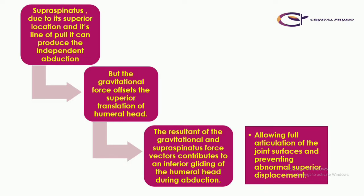The supraspinatus is located superiorly and pulls the humeral head in the superior direction. But the gravitational force offsets this superior translation, so the resultant of the supraspinatus muscle force and gravitational force acts in the inferior direction, pulling the humeral head inferiorly and preventing its abnormal superior displacement.